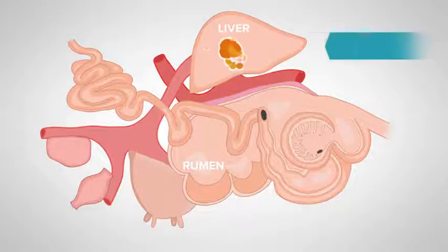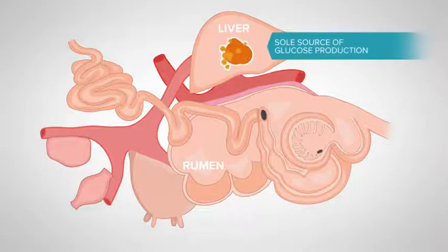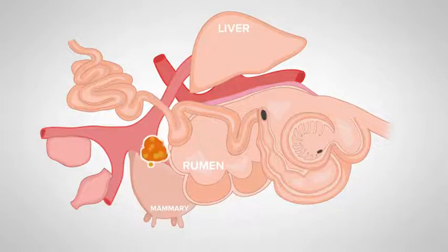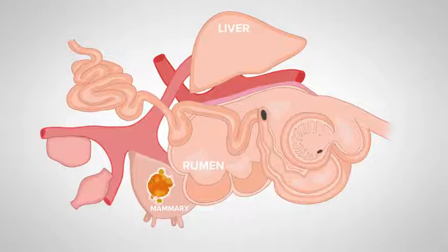The liver is the sole source of glucose production for the dairy cow, of which she has a high demand, particularly for milk production. In a lactating cow, a large proportion of the glucose that has been produced in the liver is transported to the mammary gland, where it is used to form lactose, which is the main driver for milk volume.